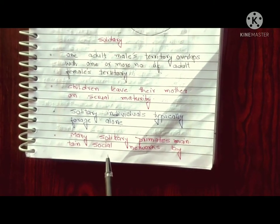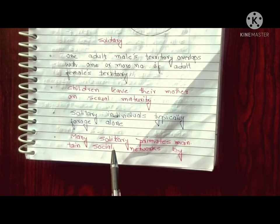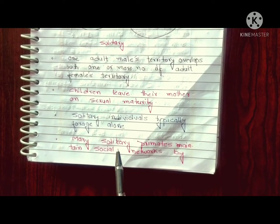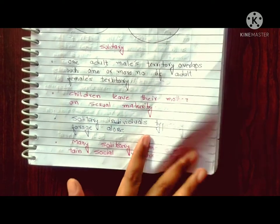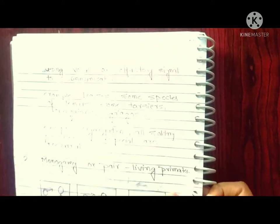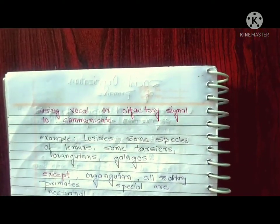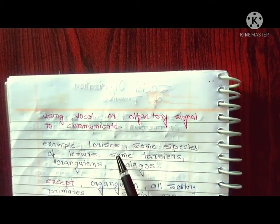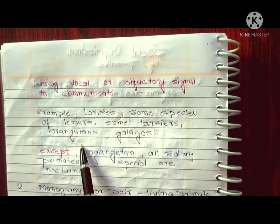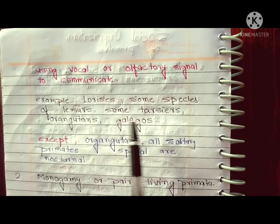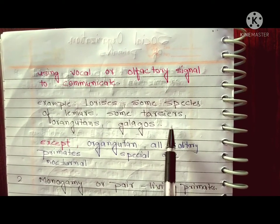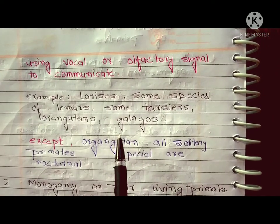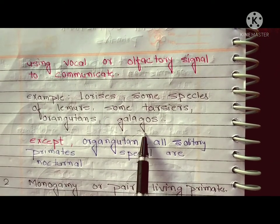Solitary primates use vocal or olfactory signals for communication. Examples of solitary primates are loris, some species of lemurs, some tarsiers, orangutans, and galagos.